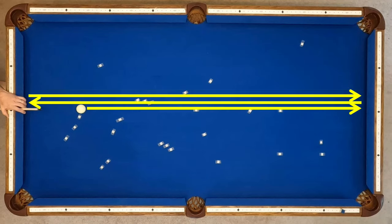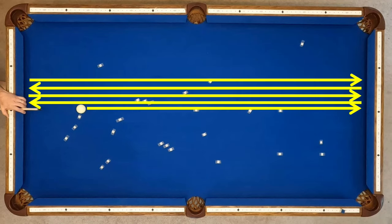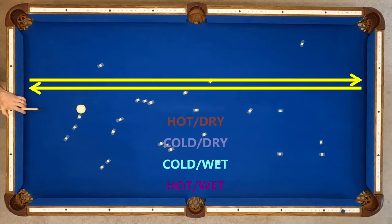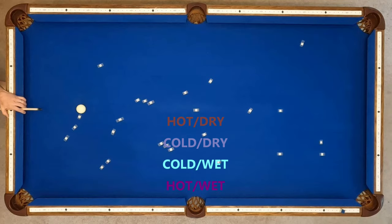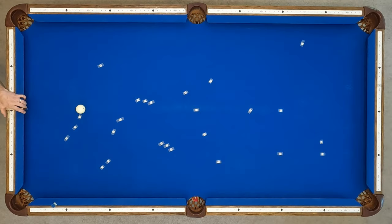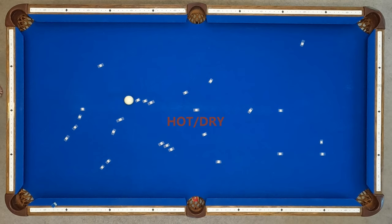First up, I shot the length of the table and recorded the maximum number of rails and the distance the ball would travel. Take a guess beforehand — which conditions might result in maximum ball travel, or might they be the same? It's harder than you think to get a perfectly straight rebound pattern as well as minimize ball hop from the rail, but these reflect the typical max length for each condition.